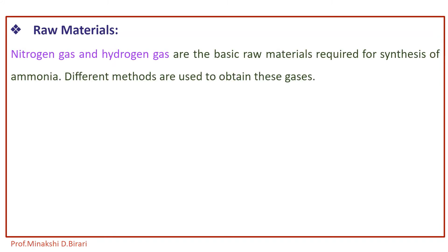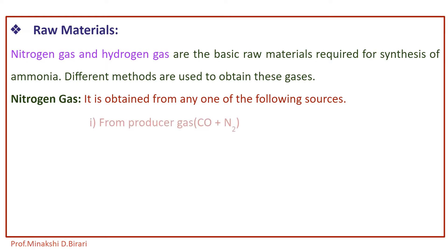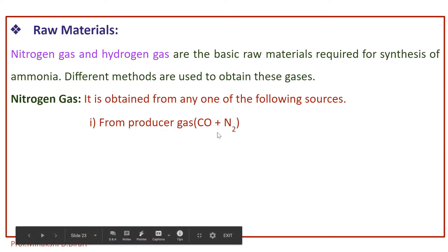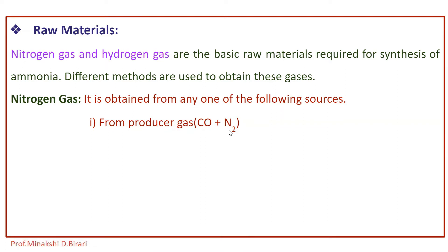Nitrogen is obtained from various sources. Nitrogen gas is obtained from producer gas (CO + N2) and also from air. Water gas is CO + H2, and producer gas is CO + N2.